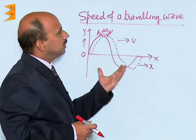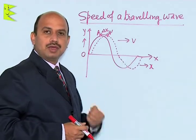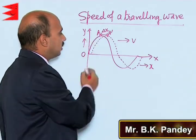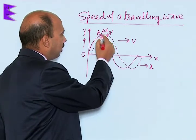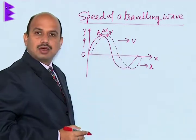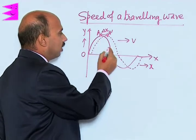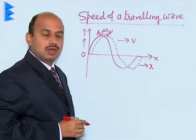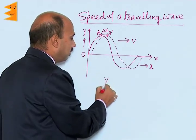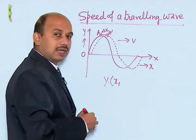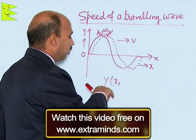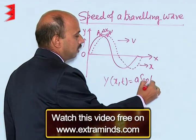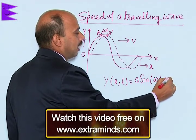Now, let's look at the next topic: the speed of a travelling wave. We have to find the speed of the wave. I have shown a transverse wave here by the solid line, and at t = 0, this is the wave starting from origin O. Its equation can be given as y(x, t) = a sin(ωt - kx), where y is the displacement of the particle at any time.